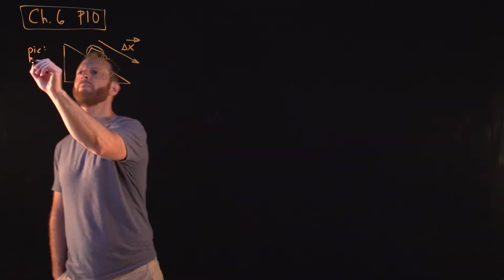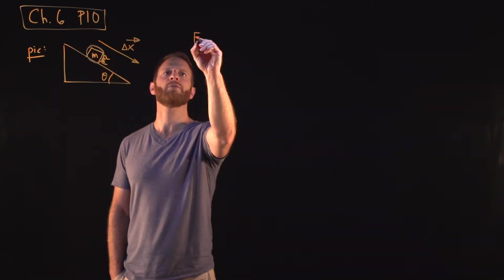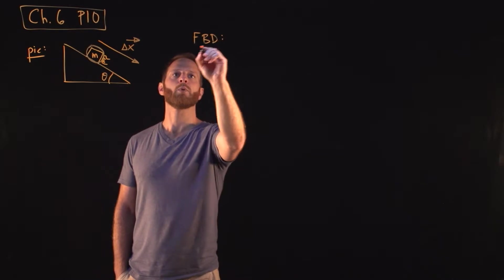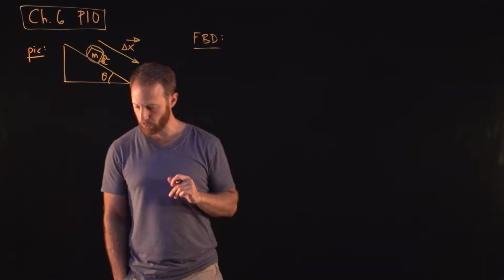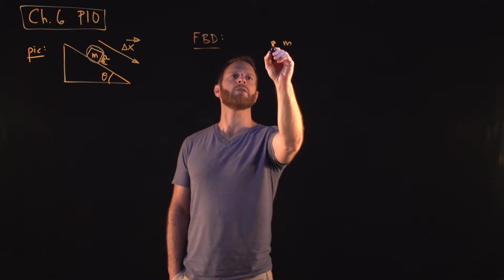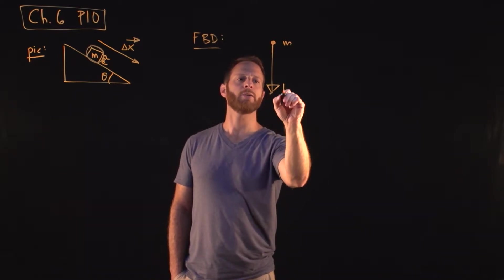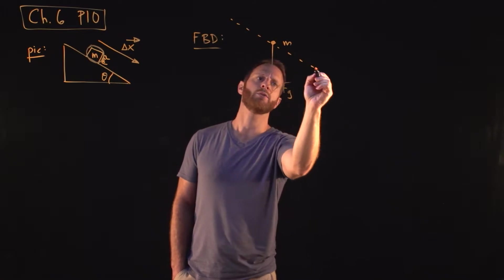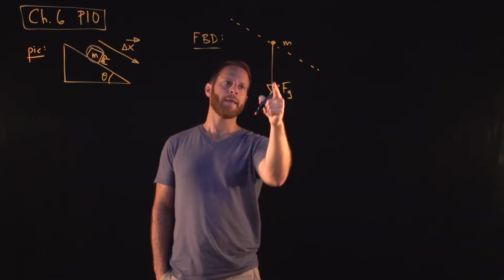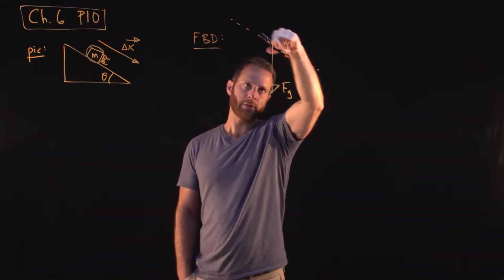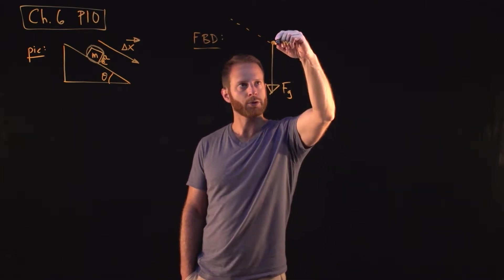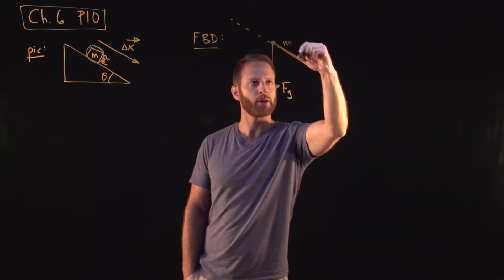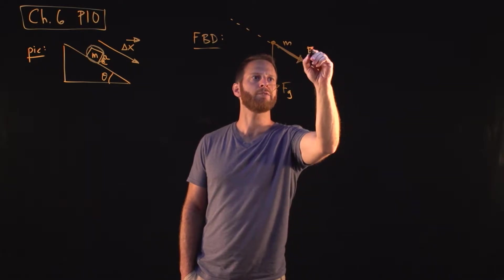Let's also look at a free body diagram because if we've got forces, chances are we're going to want to think about which way the forces are pointing. This is the mass. There's gravity, which is always pointing down. With a dashed line I'm going to indicate the direction of the incline. There's a parallel component of gravity that points in this direction, so I'll just go ahead and put that here, make it a little bit thicker, and label that Fp.